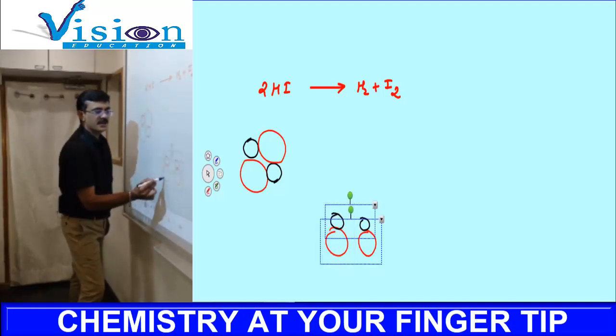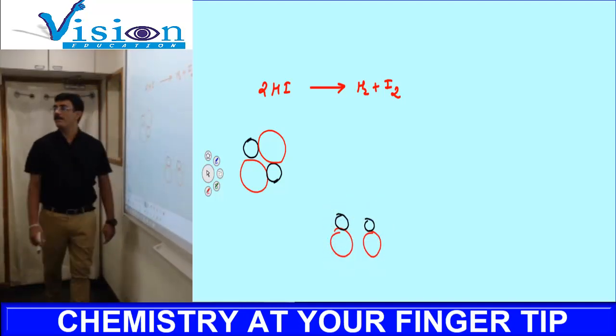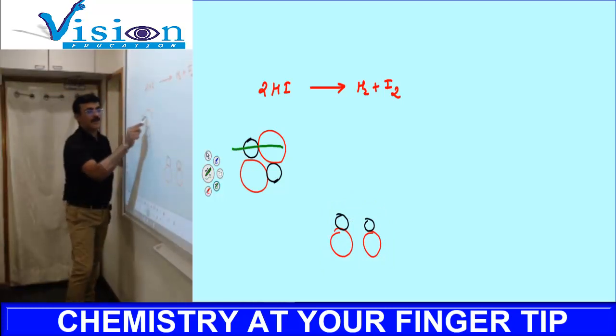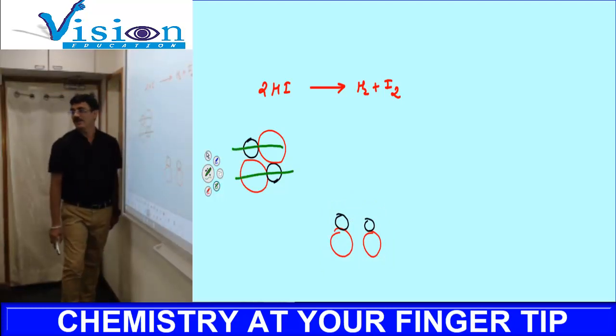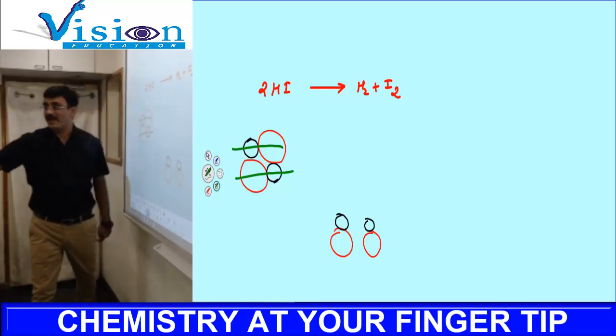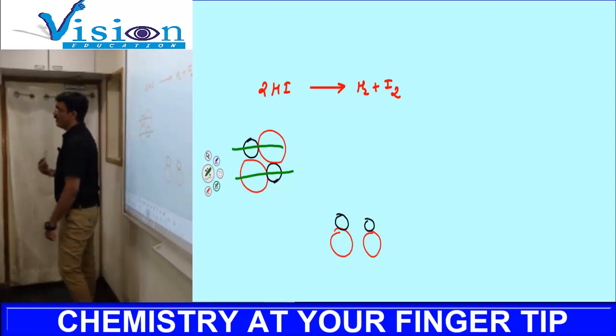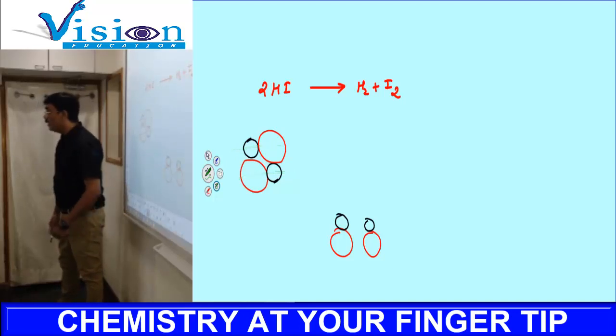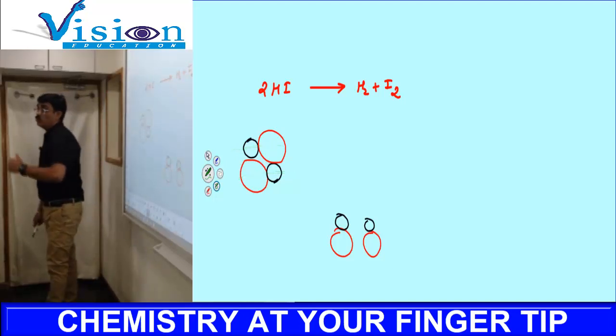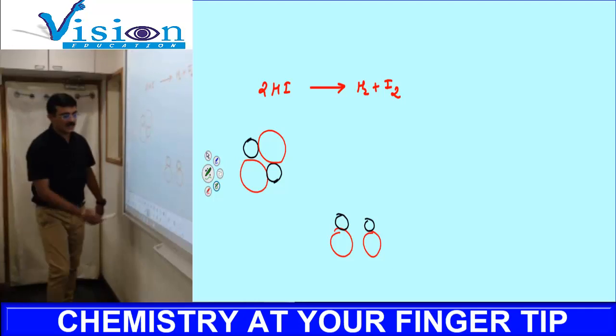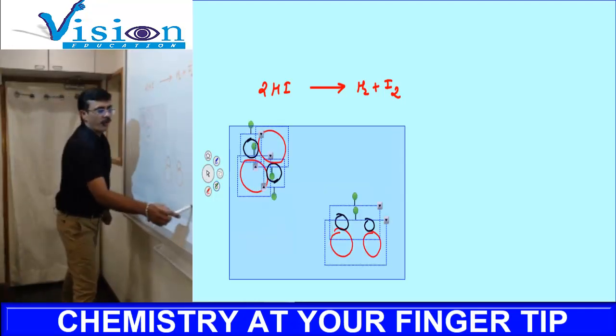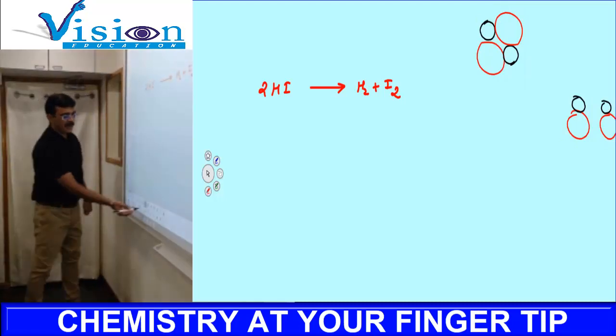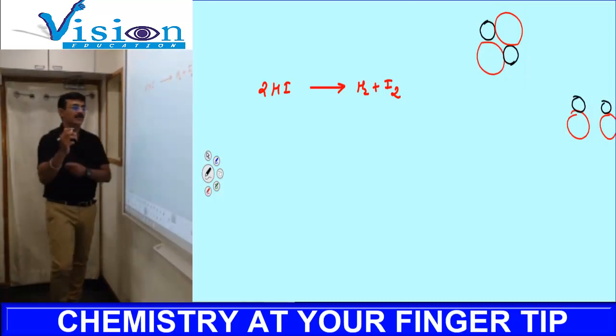When there is a collision in this direction, there is no problem—H2 and I2 are formed. But when collision happens in a different direction, collision is required but apart from collision, what else is required? Proper direction. Direction also makes a difference.